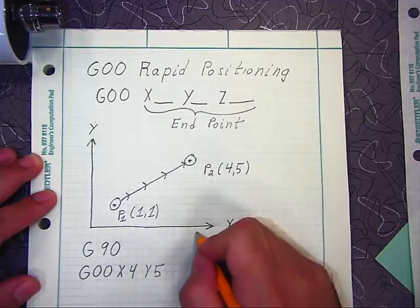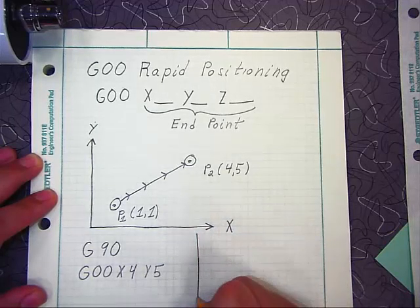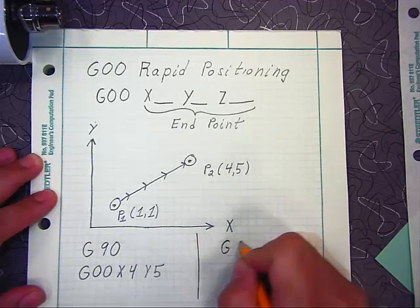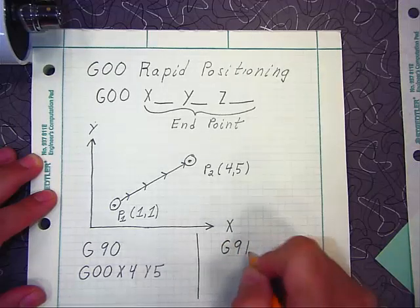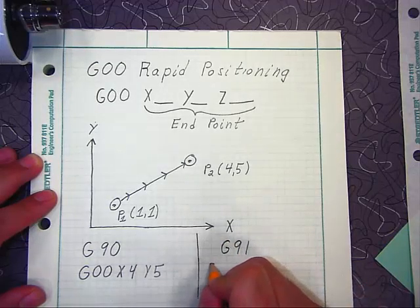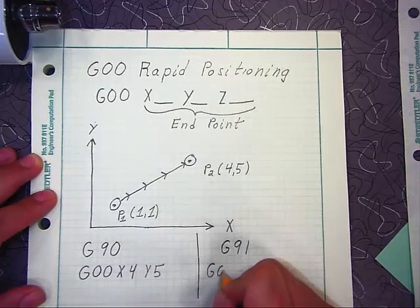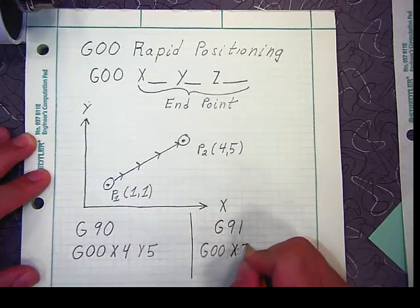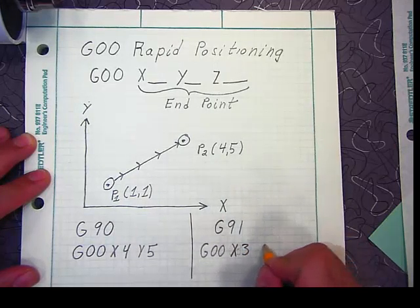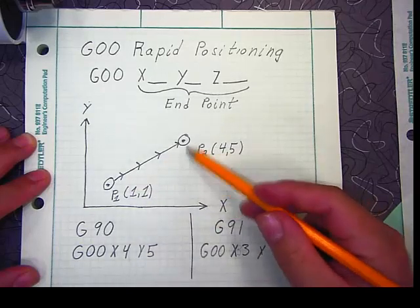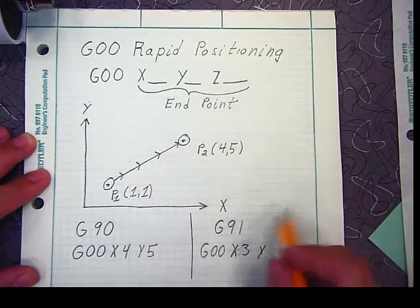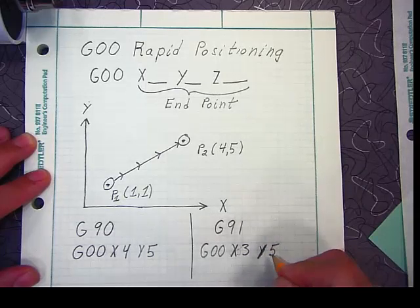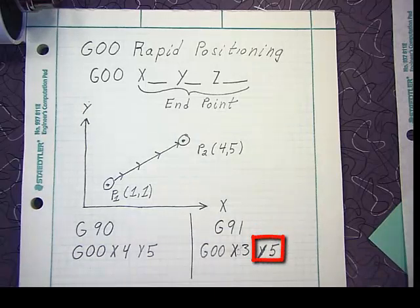But if we were using incremental coordinates, we'd start out with a G91, and then the same G00 code, but now we'd be looking at the difference in the X and the Y coordinates of point 2. So it would be X3 and then Y4.